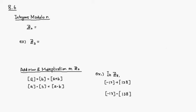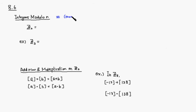Let's look at section 8.6. This section talks about integers modulo n. Integer modulo n is simply the collection of equivalence classes for the equivalence relation congruence mod n. We verify that this is an equivalence relation, and it creates equivalence classes.